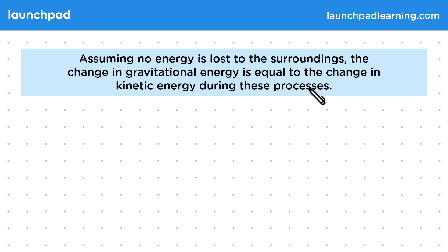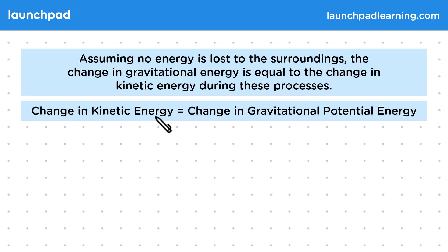So assuming no resistive forces are present, the change in kinetic energy is equal to the change in gravitational potential energy. Or EK is equal to EP.